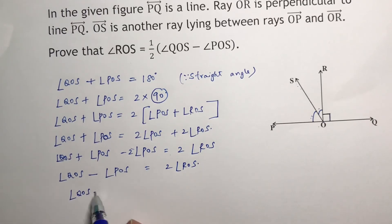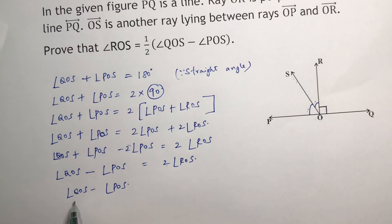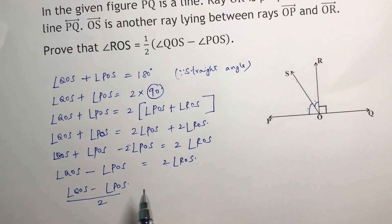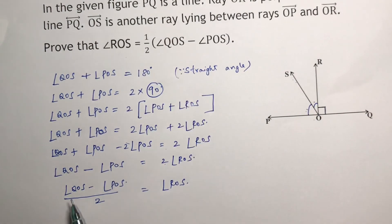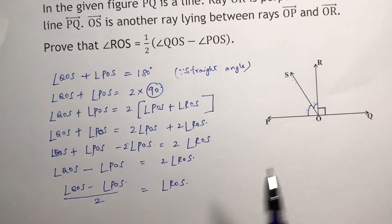Now QOS minus POS, this 2 will transpose, you will get divided by 2 equals ROS. See, therefore we got the answer, ROS is half of QOS minus POS.